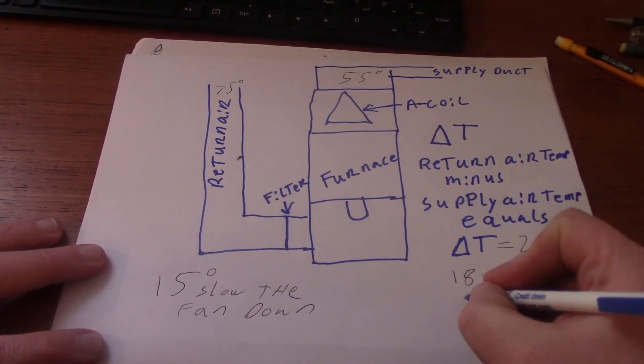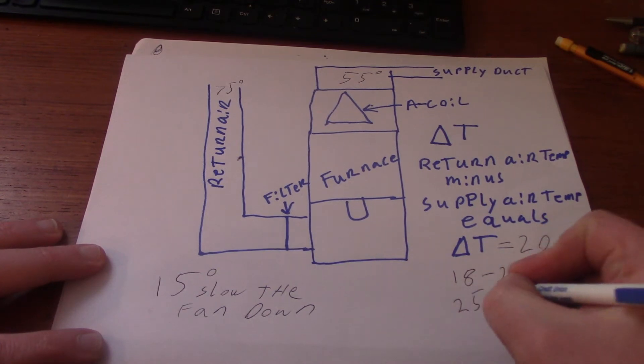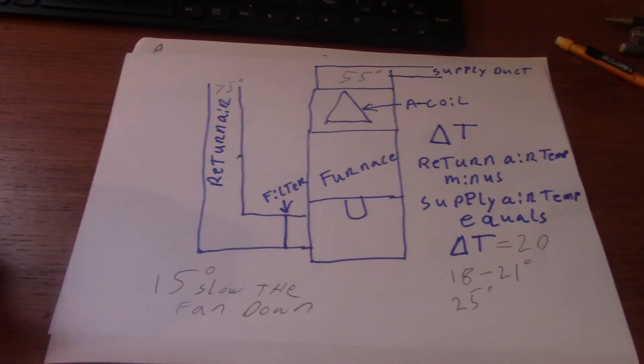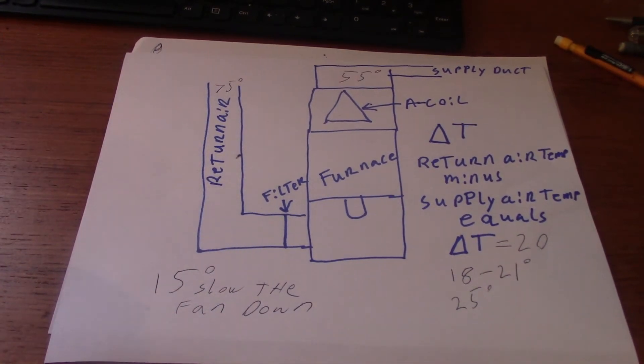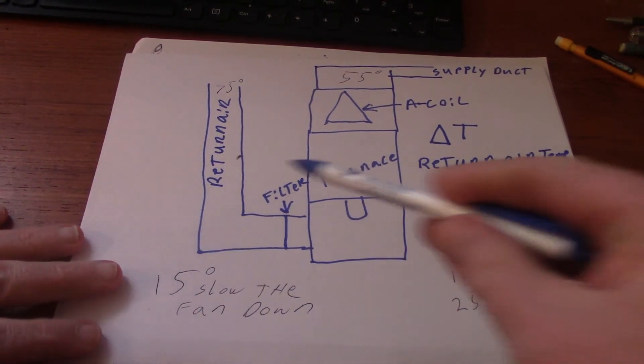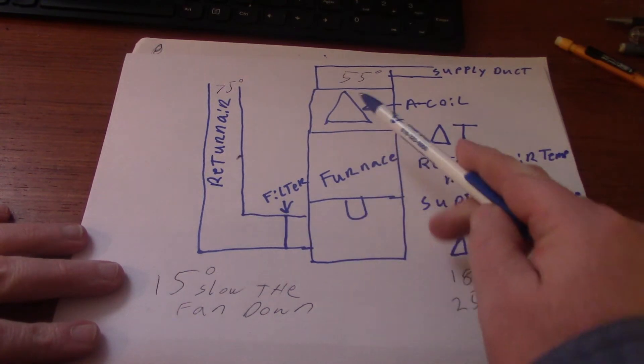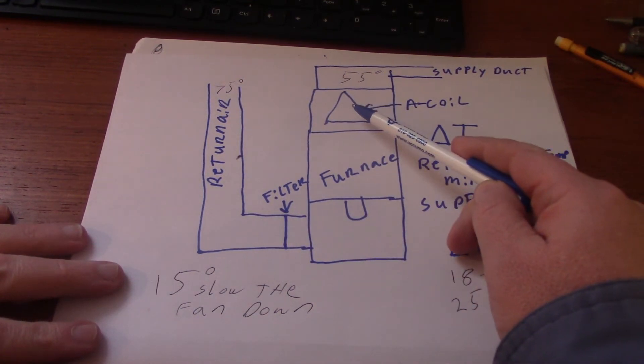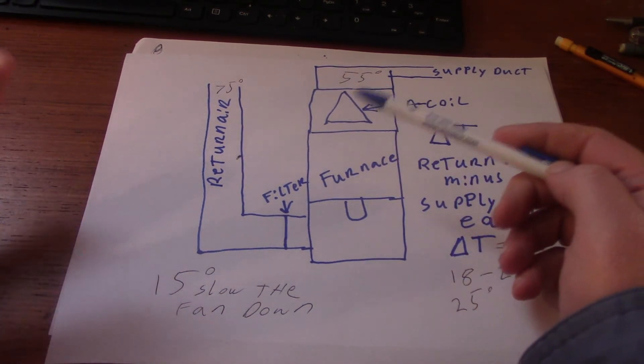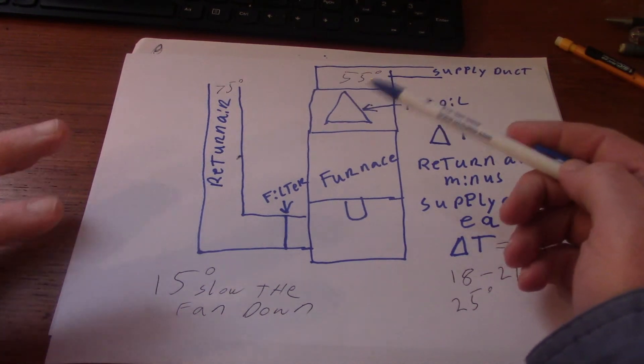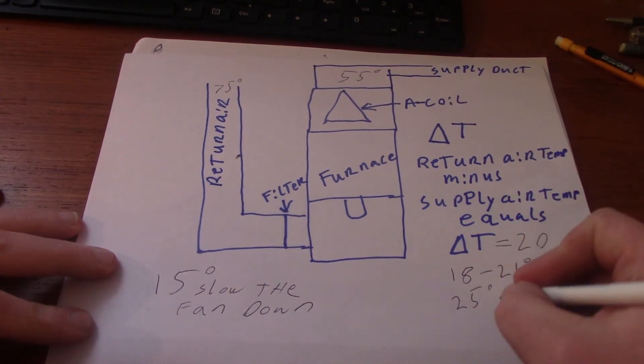If it comes up over here at, let's say, 25 degrees for your Delta T, the air is moving too slow. And you have to speed up the blower, possibly kick it on high speed, in order for it to function properly. Meaning the air is moving across the A-coil here, but it's moving too slow. It's just kind of hanging out there. And the evaporator here is absorbing too much heat from the air. Therefore you have a much colder temperature.